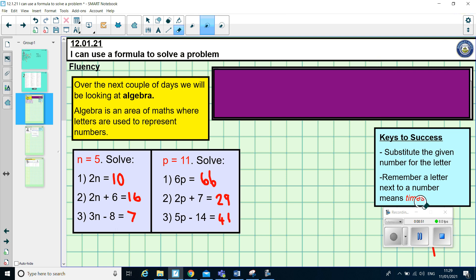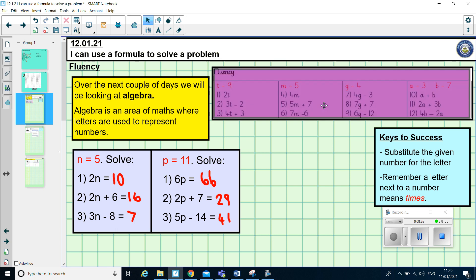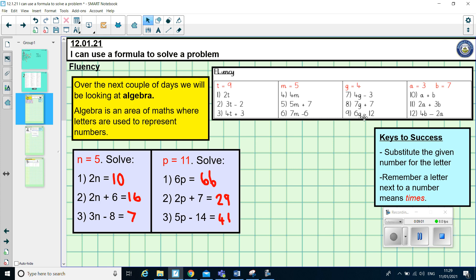Okay then, Year 6. I'm going to reveal the fluency questions. And I'd like you to have a go at doing these fluency questions in your own time then. So, if you pause the video now, there are four different sections. So, first of all, you're using the idea that t equals 9. Then, second section, m equals 5. Third section, t equals 4. And the last section, you've got a and b. But I think you'll be okay with that. So, pause the video now and have a go.